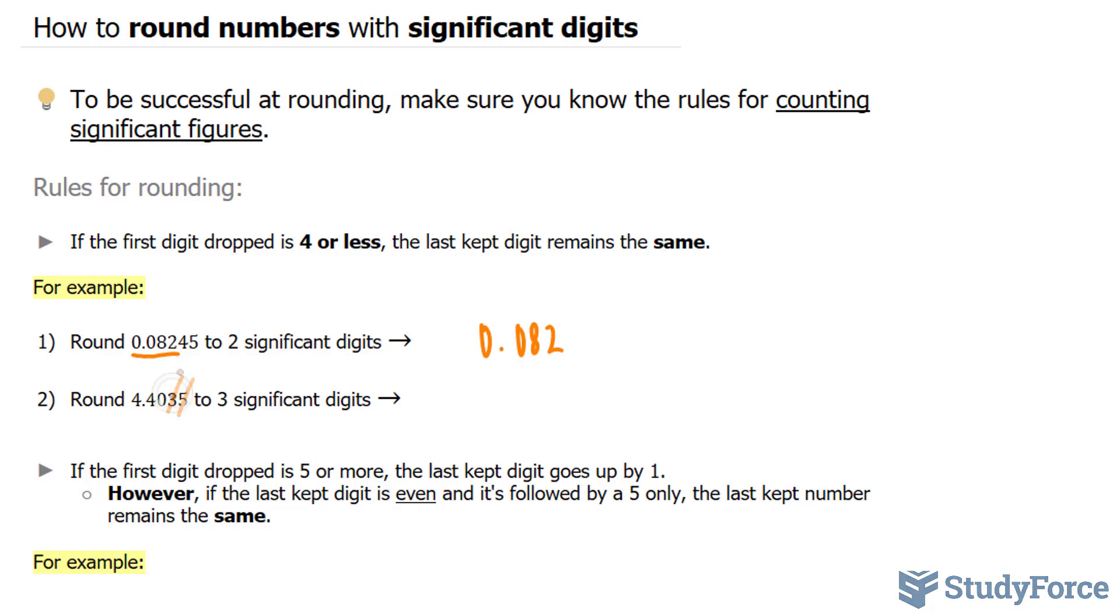Now since 3, this digit, is 4 or less, then the last kept digit, which was the 0, remains the same.